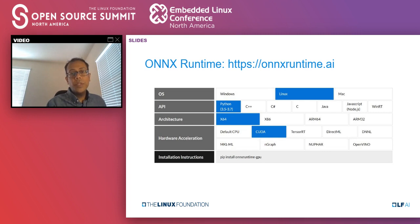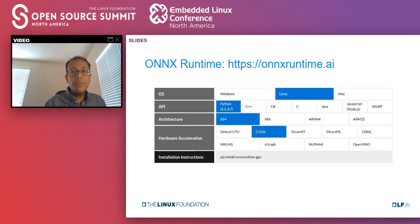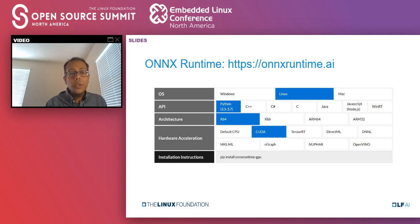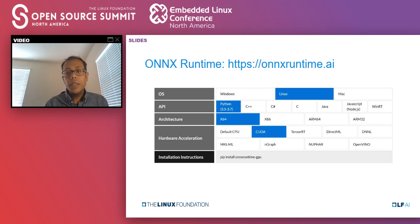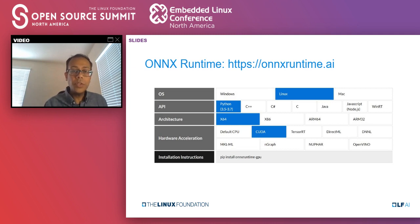For ONNX Runtime, the best way to get started is to go to onnxruntime.ai. There's a picker allowing you to specify your configuration, and it gives you instructions for how to get the specific module to install for that particular setup. We support Windows, Linux, and Mac. We support Python, C++, C#, C, Java, JavaScript, and WinRT. The JavaScript one is for use in Node.js, providing a JavaScript or TypeScript interface. WinRT is useful for writing UWP apps on Windows. For architectures, we support x64, x86, ARM64, and ARM32 — some with pre-built packages and some requiring building from source, with instructions provided.